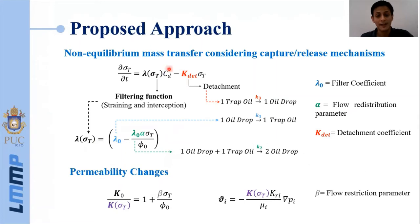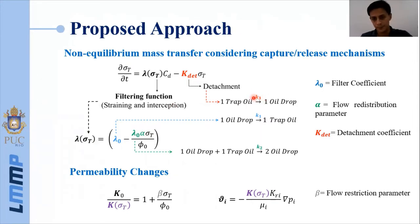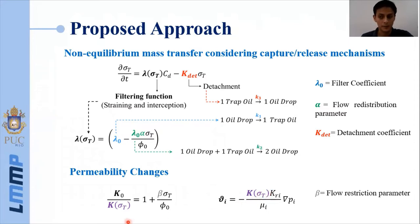Our proposed approach, considering the filtration theory, uses a second term to represent the detachment of the oil droplets. It is a similar equation to the non-equilibrium form of the Langmuir isotherm. To represent the different parameters of this equation, we use three kinetic reactions: the first related with the filtration coefficient, the second with the flow rate distribution parameter, and the third reaction related with the droplet detachment performance. With this, it is possible to obtain the concentration of oil droplets retained inside the porous media at each time step of the simulation. This concentration will alter the absolute permeability of the model as a way to interpolate the relative permeability curves, associated with the flow restriction parameter beta.